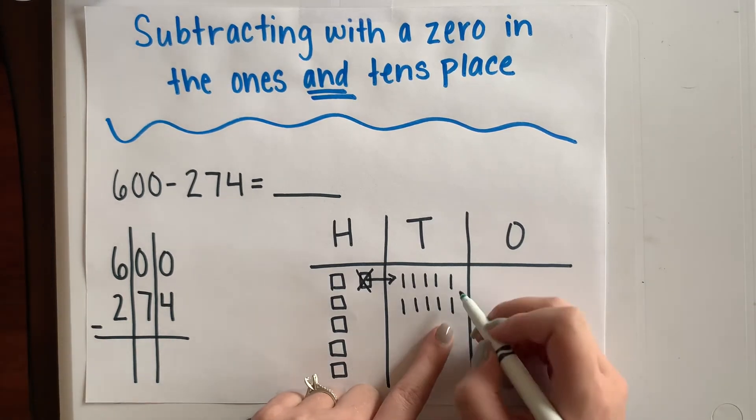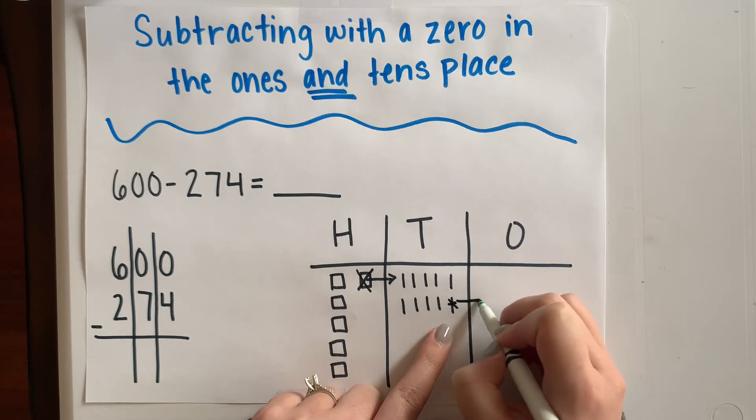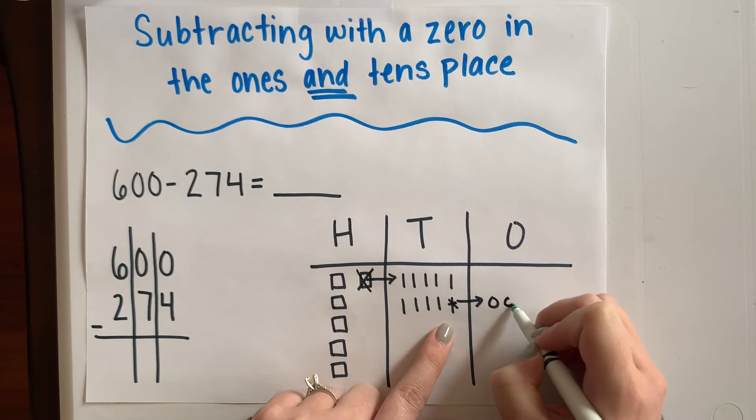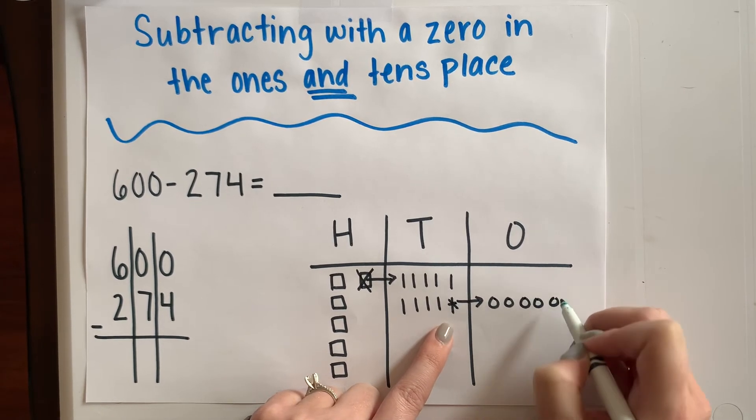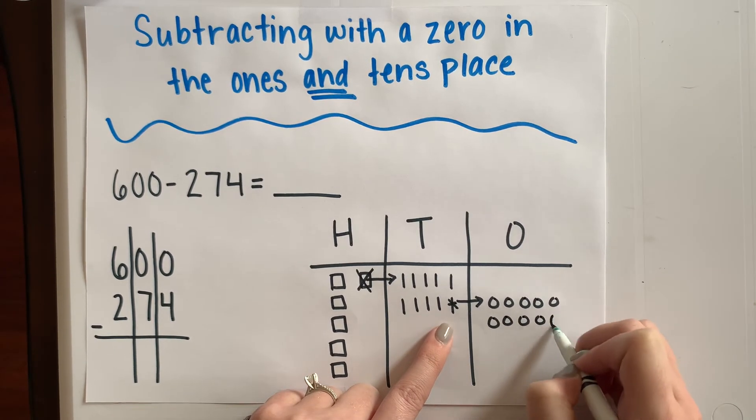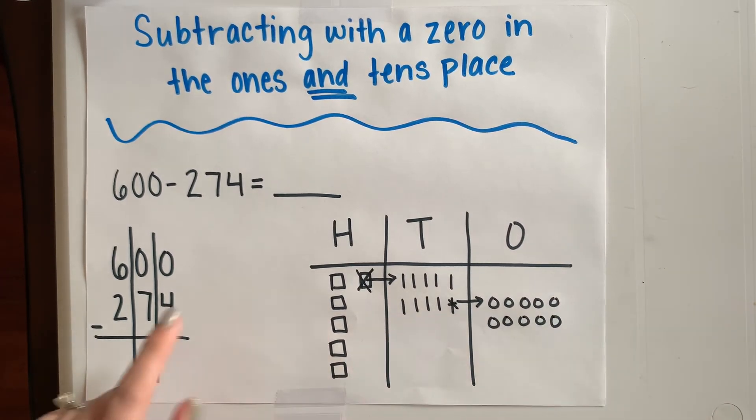Now I have a ten that I can decompose and turn into one, two, three, four, five, six, seven, eight, nine, ten. Ten ones. Now I can subtract my four ones.